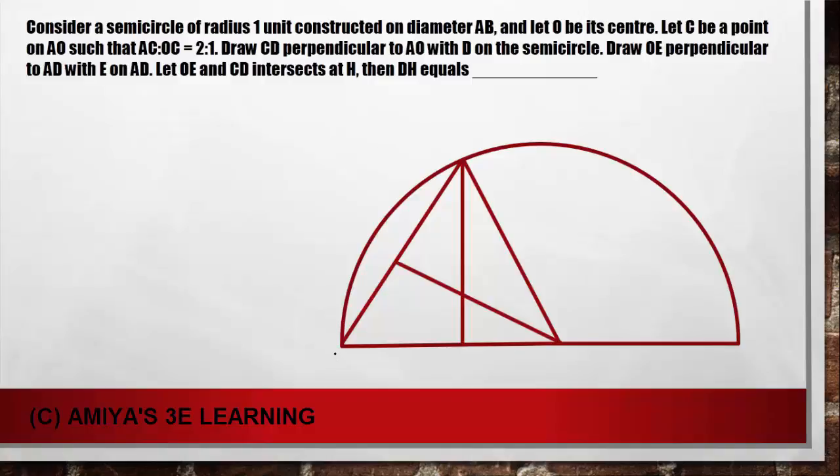So first of all I am giving the name according to the question. We have AB which is the semicircle's diameter. The radius is one unit. And let O be the center. I am just plotting the points. Let C be the point on AO, and the ratio is 2 to 1. What I am writing is the ratio.